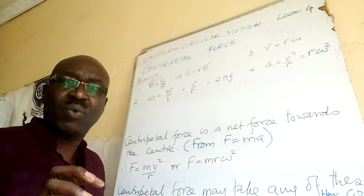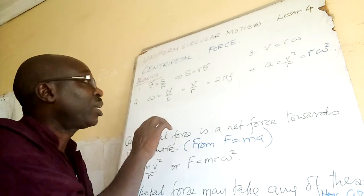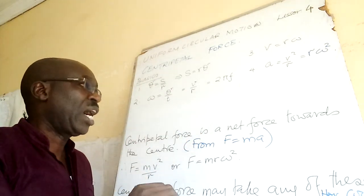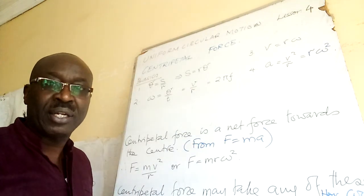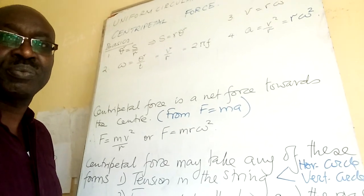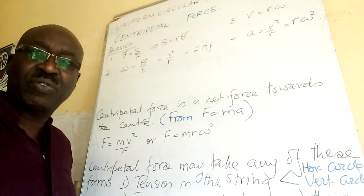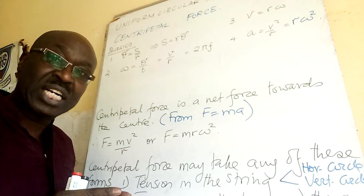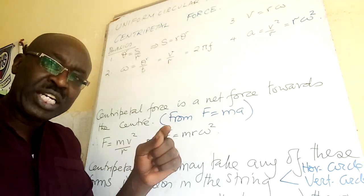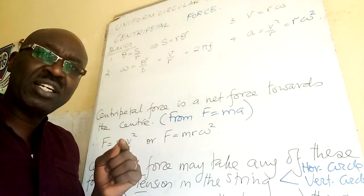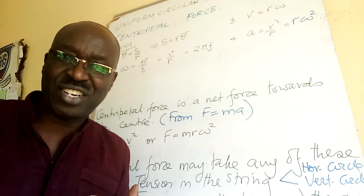You must understand all those four formulas — formula number one up to formula number four are very important. Today I am going to add another formula: centripetal force. Centripetal force is a net force towards the center — it is a net force towards the center. Centripetal acceleration is also directed towards the center. This is the force that keeps bodies in a circular path.